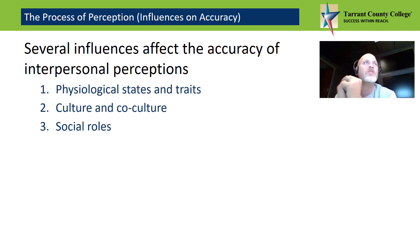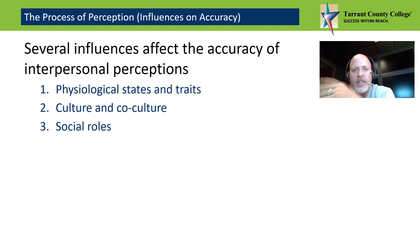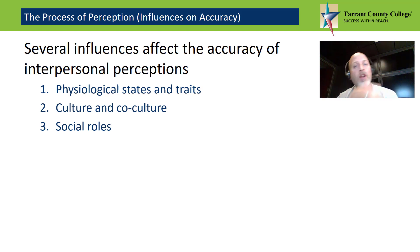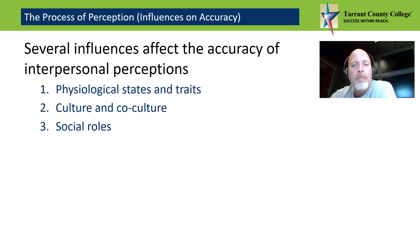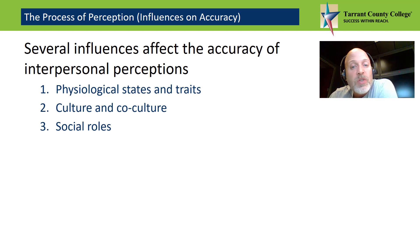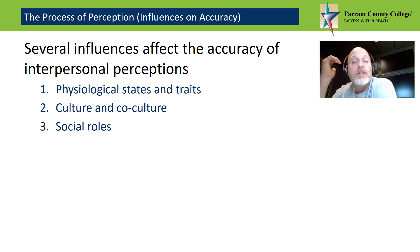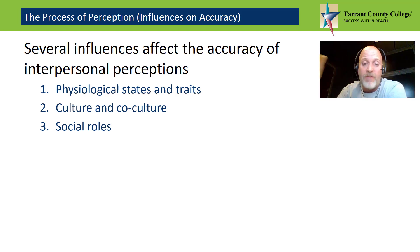The first is physical states and traits — conditions that are temporary. Another powerful influence on the accuracy of our perceptions of others is the culture and co-culture which we identify with. Cultural values and norms have many different effects on the way we communicate interpersonally, in addition to affecting our behavior. Culture also influences our perceptions and interpretations of other people's behavior.